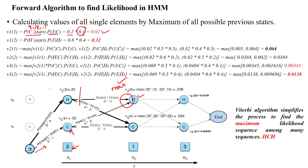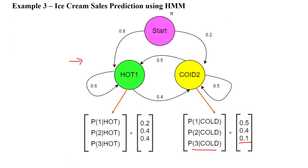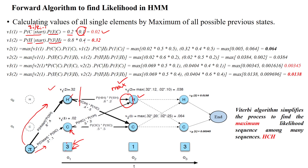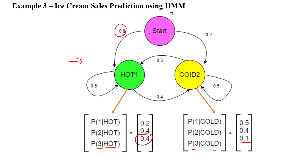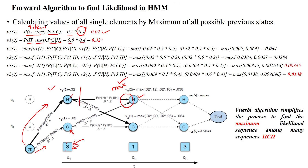The first day may also be hot, so we calculate P(hot|start) multiplied by P(3|hot). The initial probability from start to hot is 0.8, and P(3|hot) is 0.4, giving us 0.8 × 0.4 = 0.32. The first day calculation is now complete.